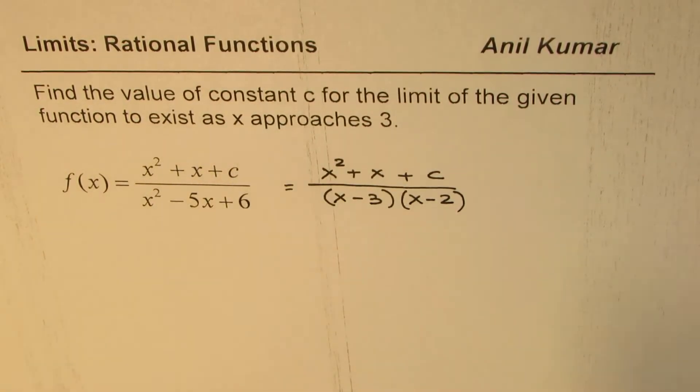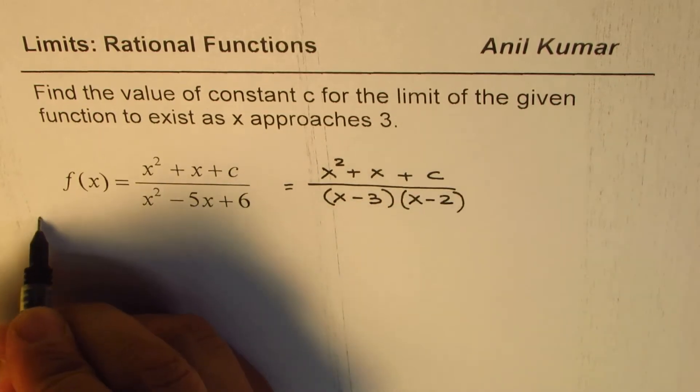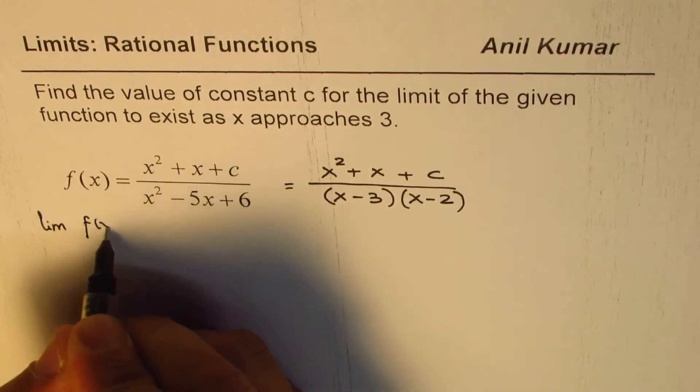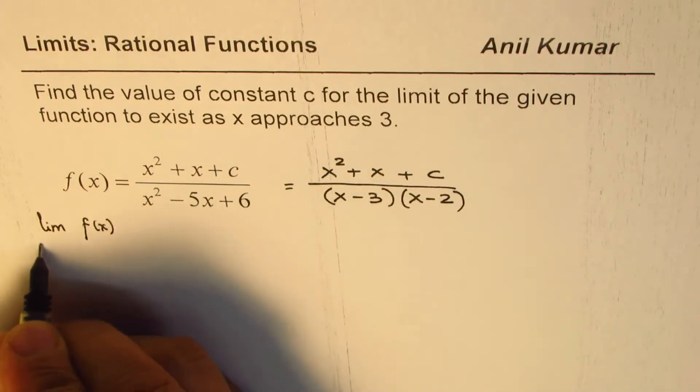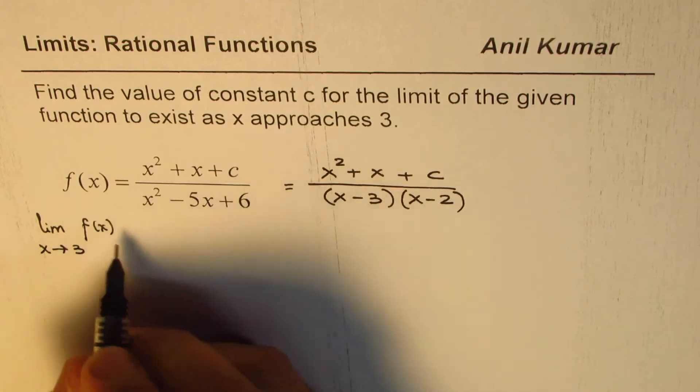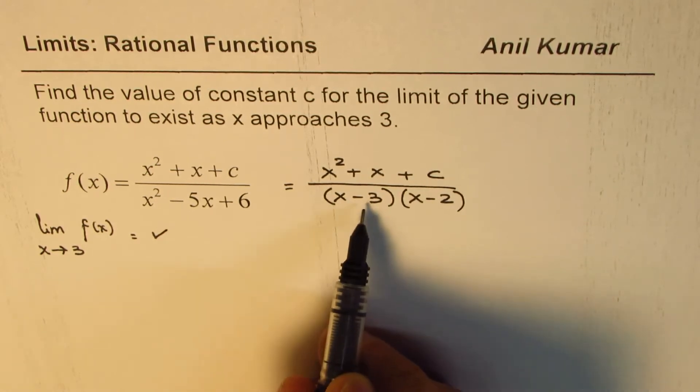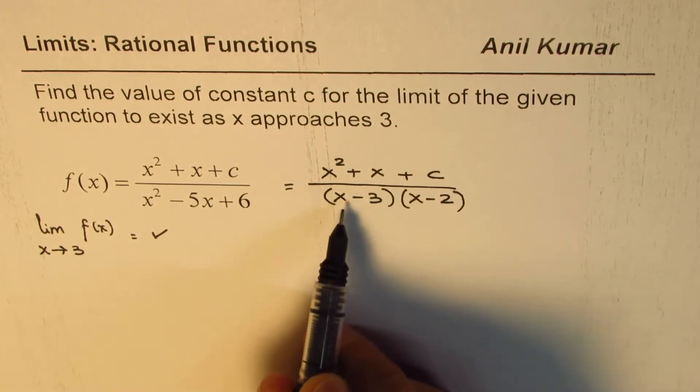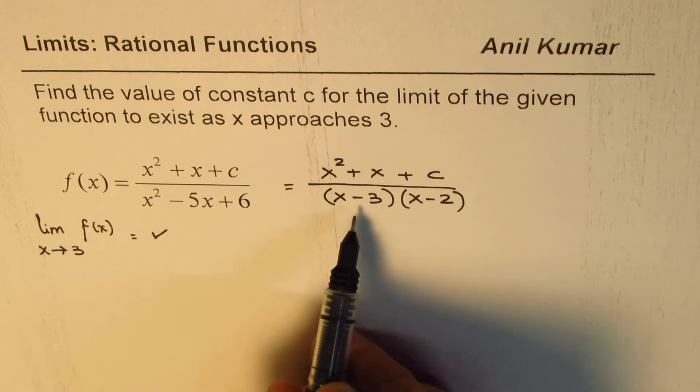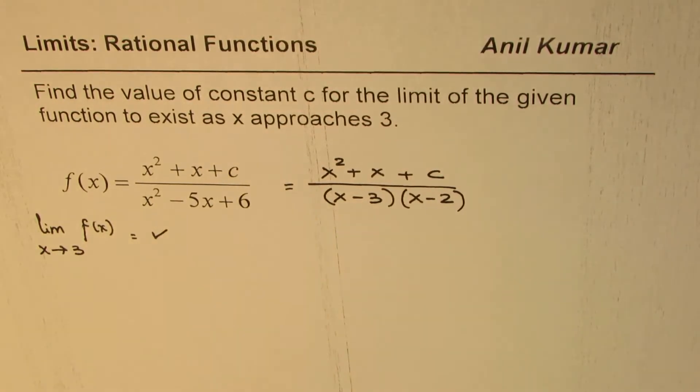Now the question really is that we need to ensure that limit of this function f of x exists as x approaches 3. When you see this kind of a function, x minus 3 is a factor in the denominator. And that clearly indicates that the limit does not exist at x minus 3 since there is a vertical asymptote here. As you approach a vertical asymptote, you will be approaching either positive infinity or negative infinity. Both these terms are not real numbers. So the limit does not exist.